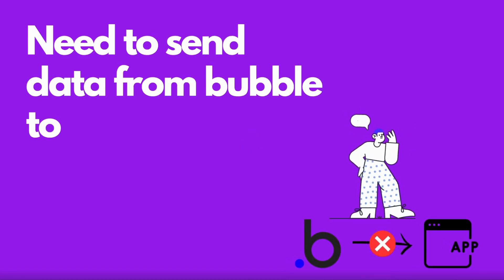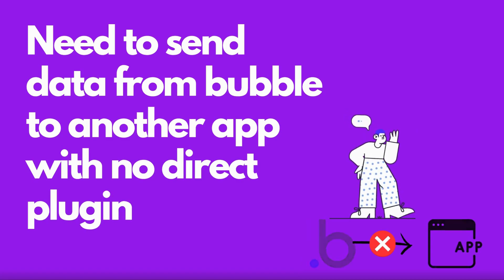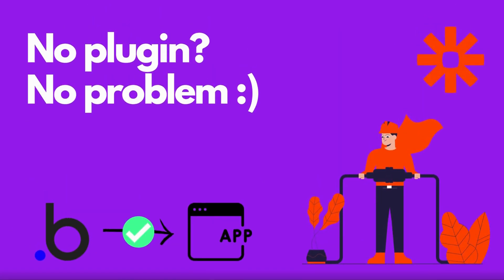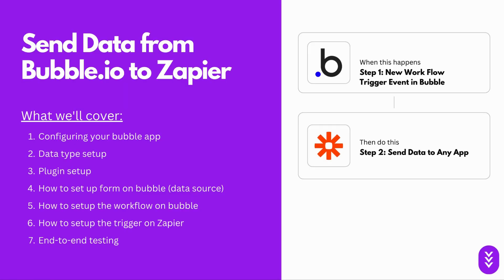Do you need to send data from Bubble to another app that doesn't currently have a Bubble plugin? Luckily for you, you're in the right place, and we have Zapier. No plugin, no problem. The most common use case for this kind of Zap is that you have a Bubble application and you want to send data to another app, but that app currently does not have a plugin directly with Bubble. So you'll need to integrate your Bubble app with Zapier so that you could send data from Bubble to Zapier and then to another external data source.